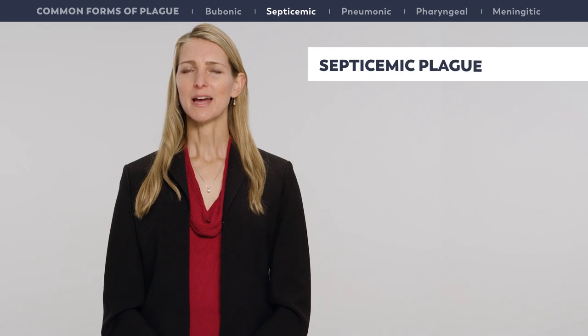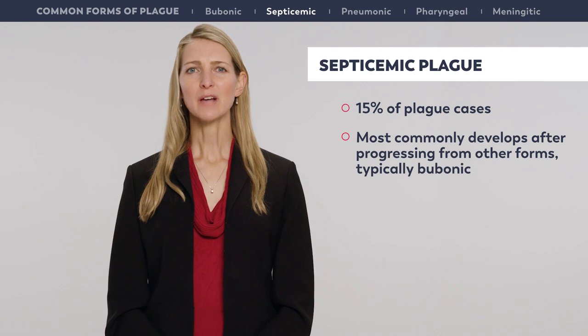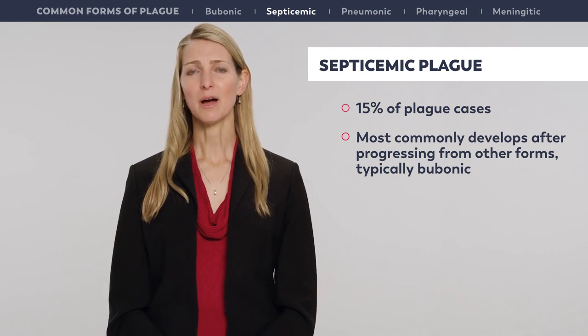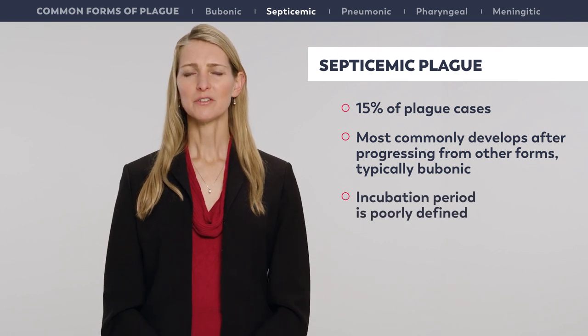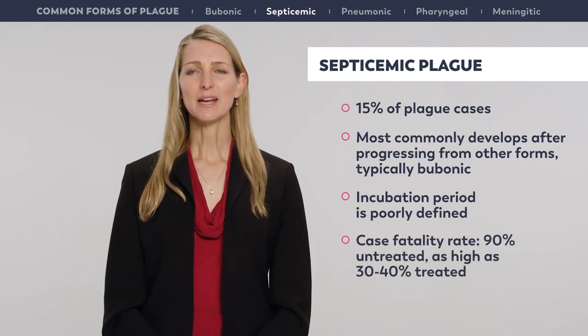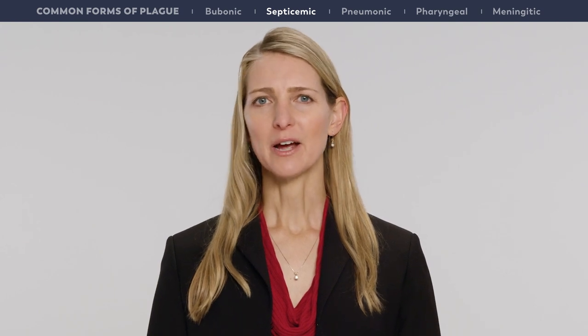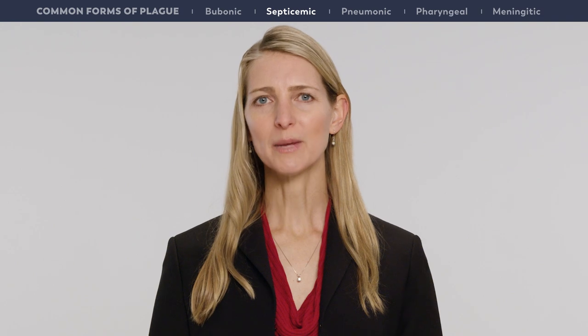Septicemic plague accounts for approximately 15 percent of plague cases. It most commonly develops after progressing from other clinical forms, typically bubonic. The incubation period for septicemic plague is poorly defined but likely occurs within days of exposure. The case fatality rate is 90 percent if untreated, and even with prompt treatment can still be as high as 30 to 40 percent. Septicemic plague is characterized by dissemination of infection and a rapidly progressive, overwhelming endotoxemia.